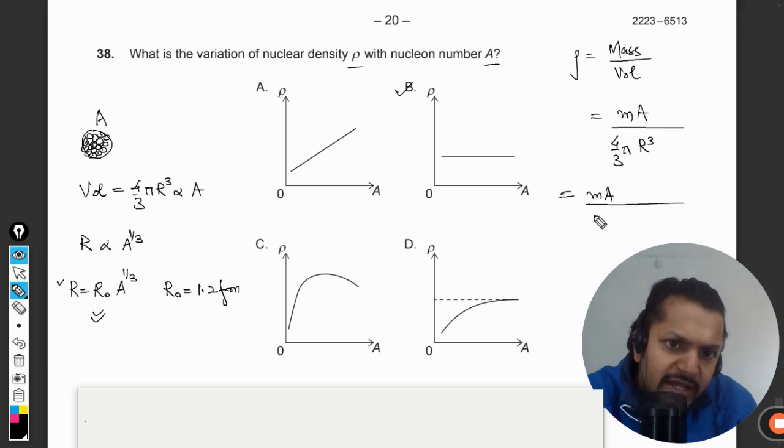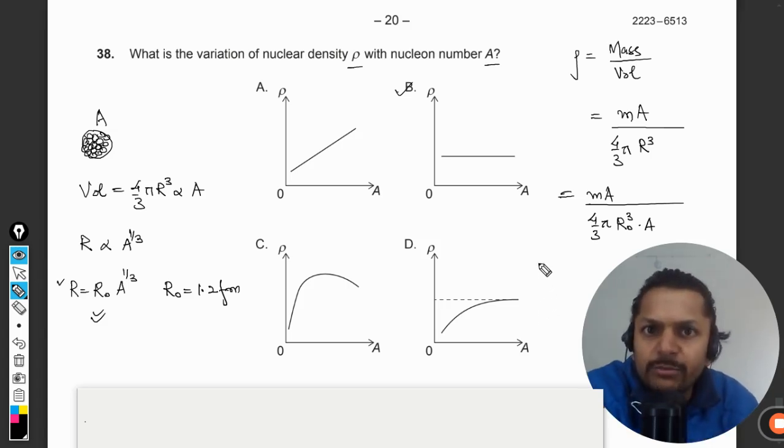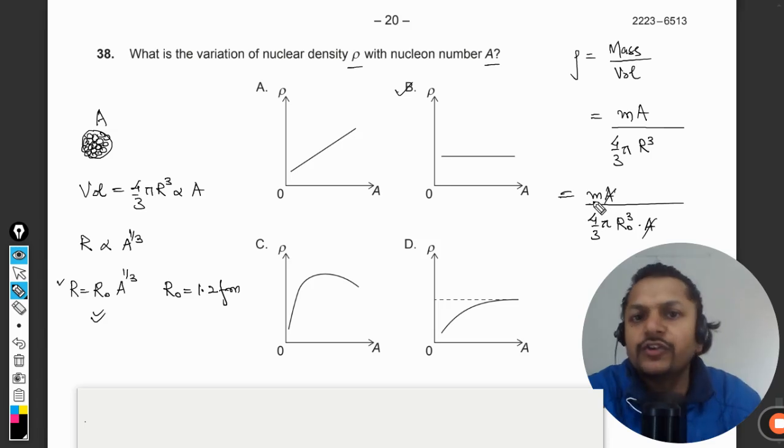It will come out to be mA divided by 4/3 π r³. r³ can be written as r₀³ times A. That is not a problem, I believe you can very well substitute that value there. A and A get cancelled out, you see.